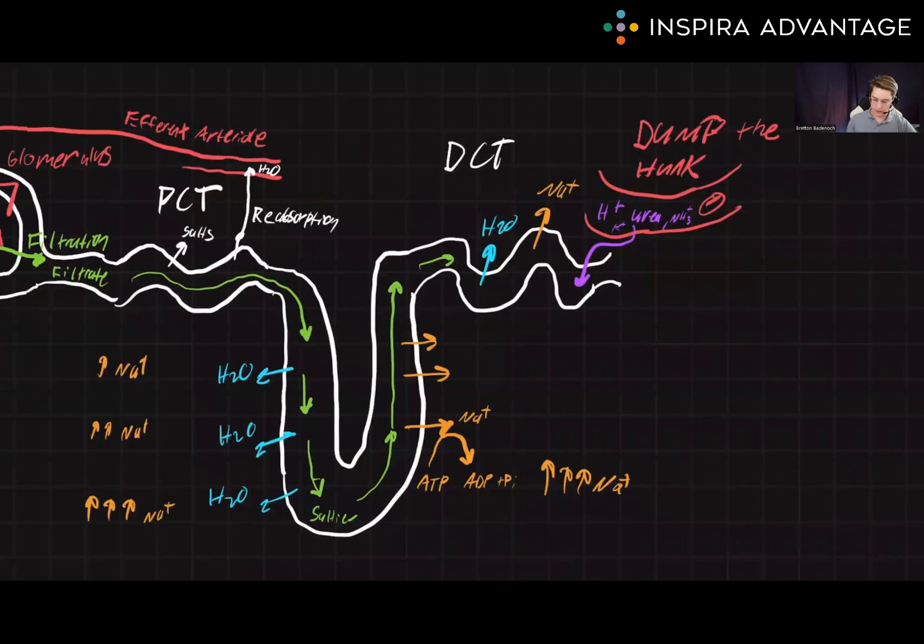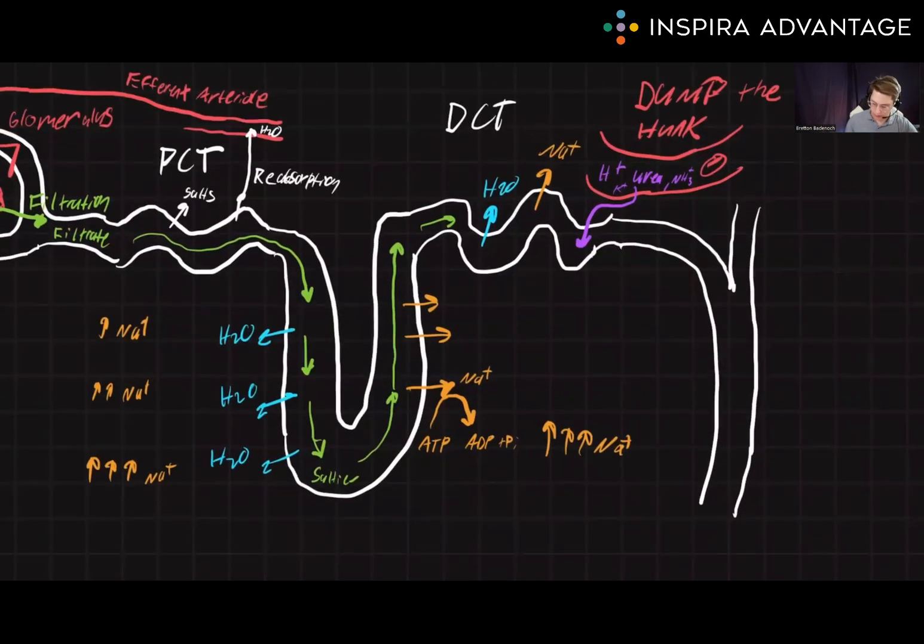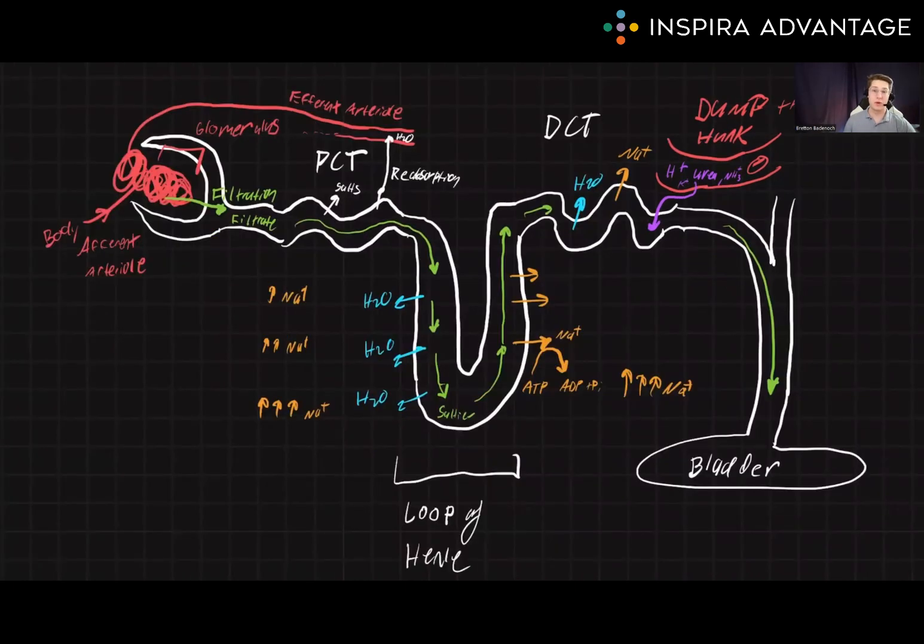Finally, the filtrate with all of these toxins is going to move into the collecting duct, where a little bit of water is still reabsorbed before finally the fluid is secreted into the bladder. Thank you so much for watching our video on kidney anatomy, and I will see you next time.